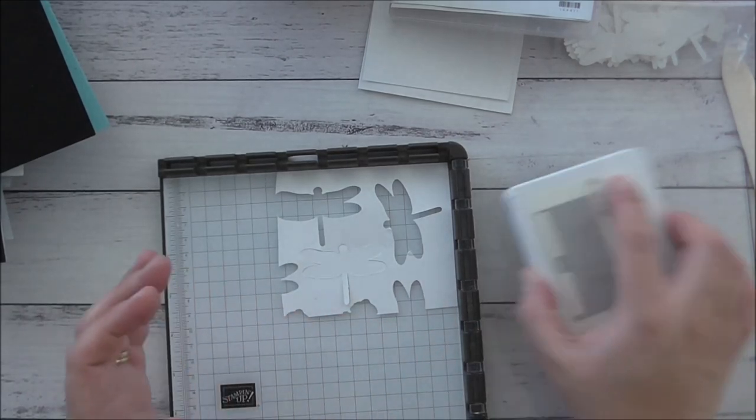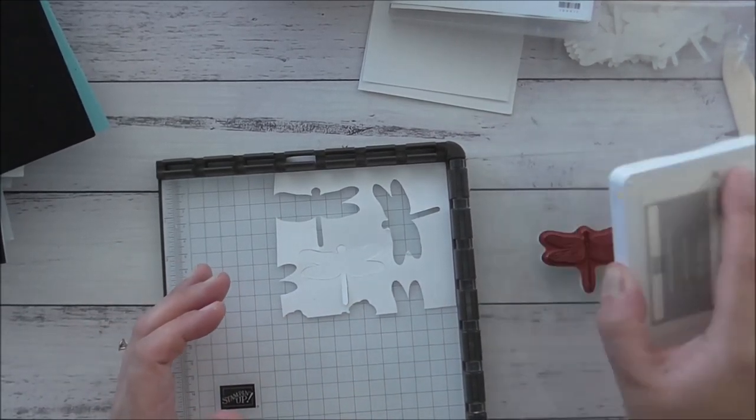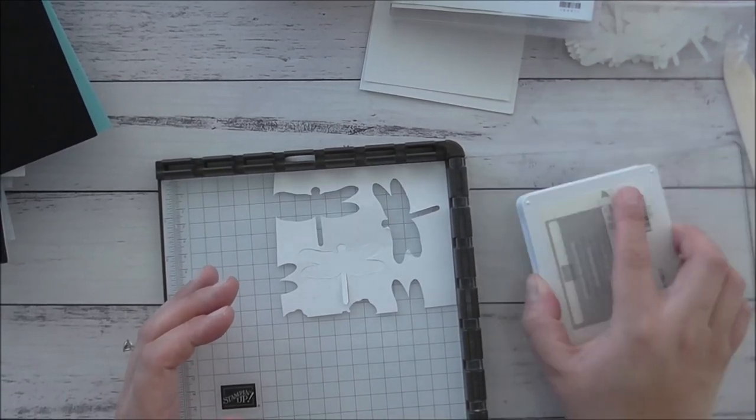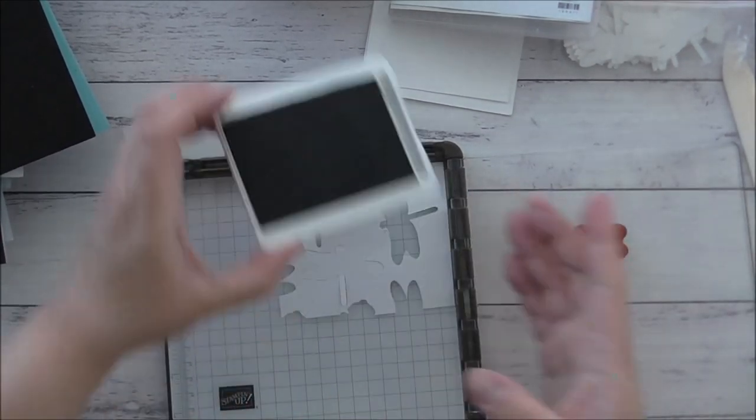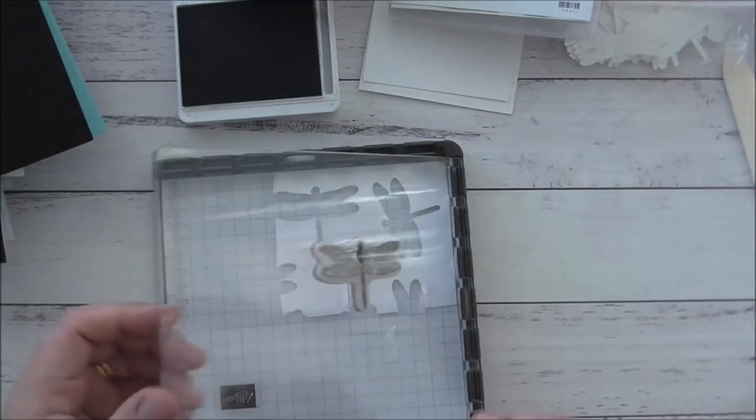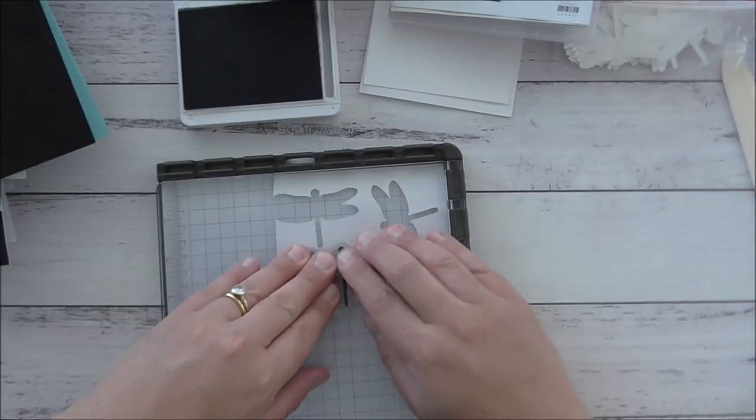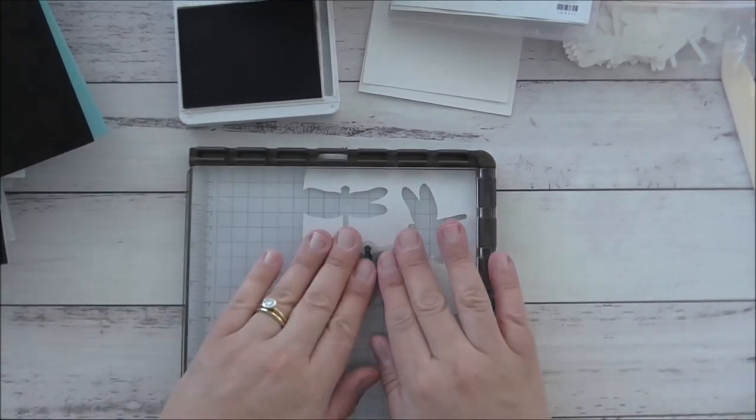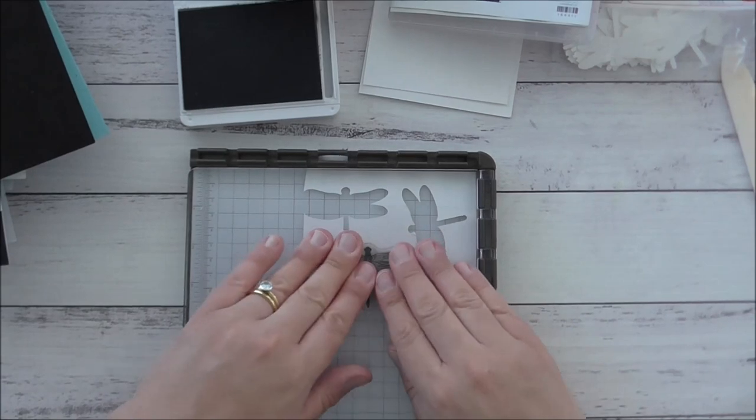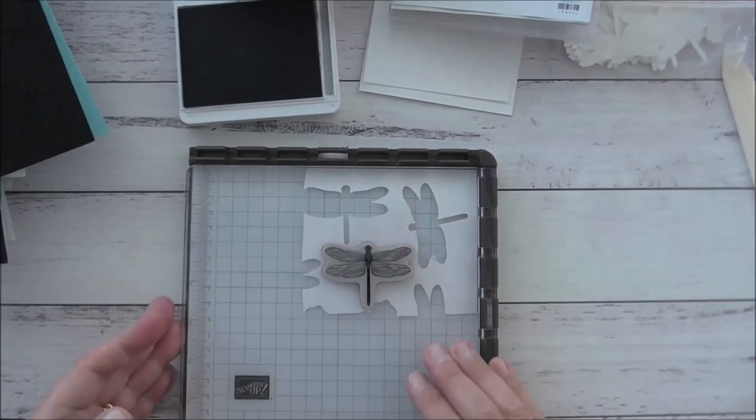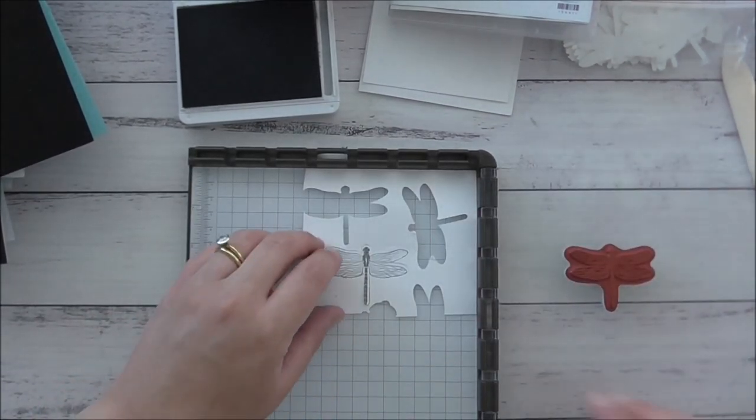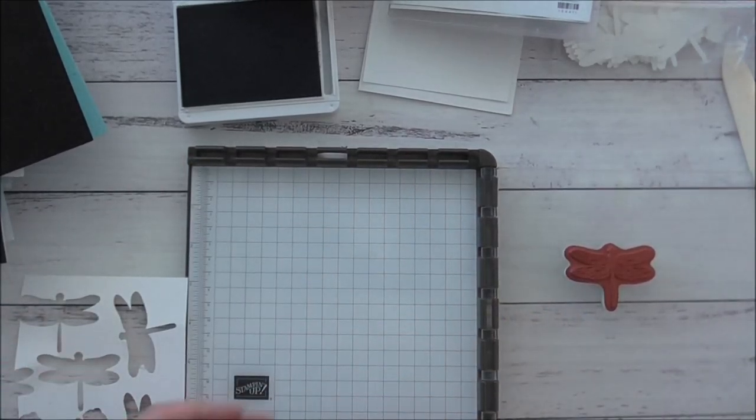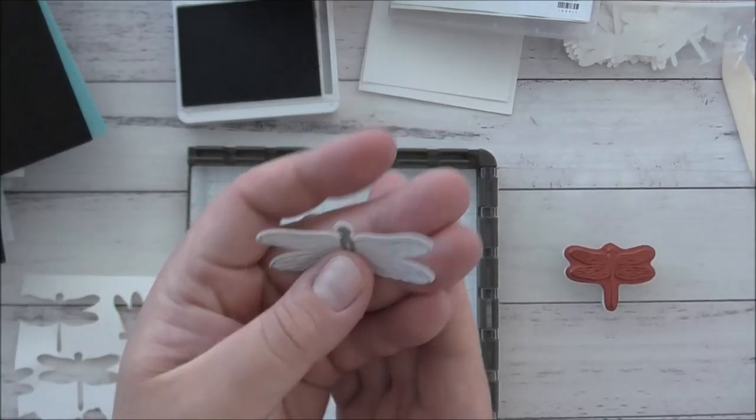So I'm going to use smoky slate ink to stamp the butterfly, and I'm just going to do that. And the beauty is if I didn't stamp it properly I can go back on it again.